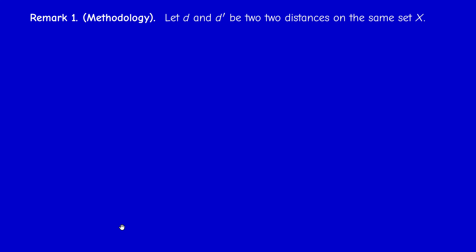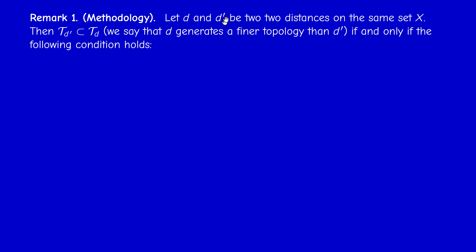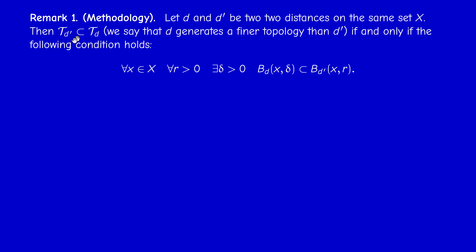Let us record what we learned from this proof. If you have two distances on the same set X, and if the topology generated by d is bigger than the topology generated by d', we say that d generates a finer or bigger topology than d'. This holds if and only if: for every x in X and every positive radius r, there exists a positive delta such that the ball with respect to d of center x and radius delta is contained in the ball with respect to d' of center x and radius r.